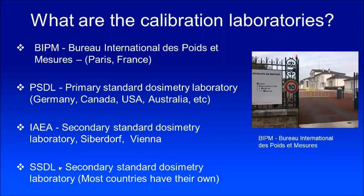What is the difference between the primary standard dosimetry laboratory and the secondary standard dosimetry laboratory? A primary standard dosimetry laboratory has measurement techniques where they can directly provide you the absolute dose. Whereas a secondary standard dosimetry laboratory has an ion chamber or dosimeter that requires a calibration — they don't directly get absolute dose, but they have a calibration factor from a primary standard dosimetry laboratory.